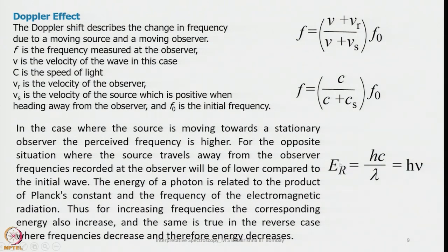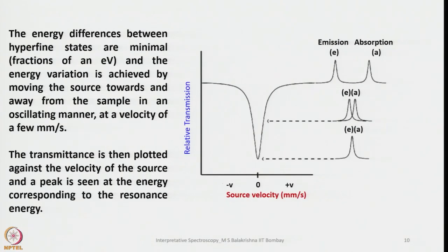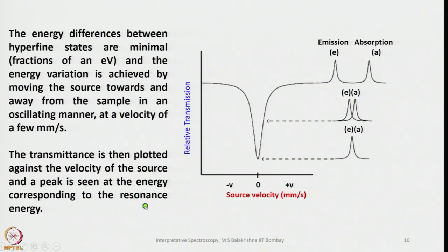Generally we use all energy calculations with the ground state and the excited state. The energy difference between the hyperfine states is minimal, and the energy variation is achieved by moving the source towards and away from the sample in an oscillating manner at a velocity of a few millimeters per second. The transmittance is then plotted against the velocity of the source, and a peak is seen at the energy corresponding to the resonance energy.